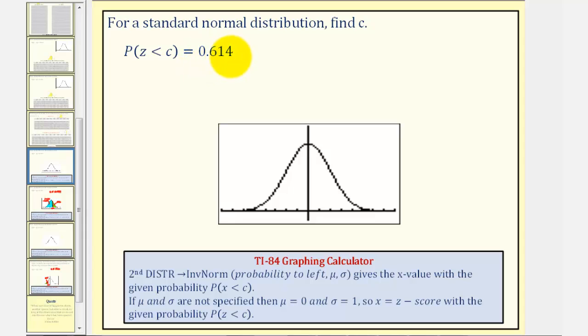And since this value is greater than 0.5, we should recognize that the Z-score will be positive. Since when Z is zero, the data value is the mean, the probability to the left would be 50%, and the probability to the right would be 50%.